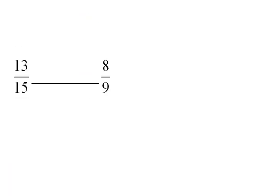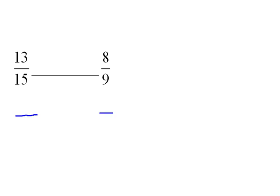Okay, let's try one more. Here we have 13 fifteenths and eight ninths. And again, we can't compare the two because they have different denominators right now. So we need to figure out a common denominator between fifteen and nine. And in this case, that would be forty-five. Forty-five is the first number that they will both go into.